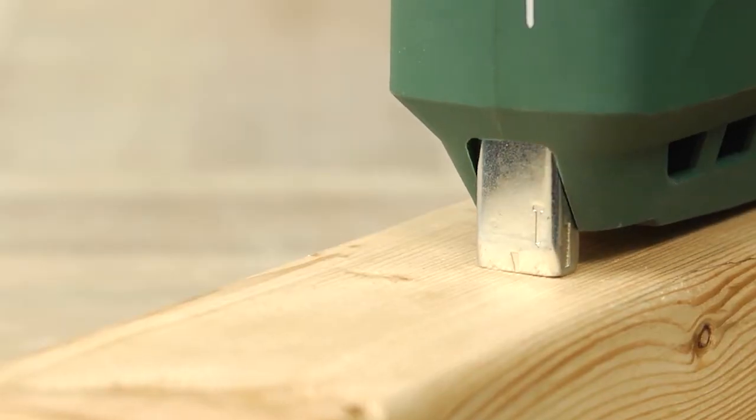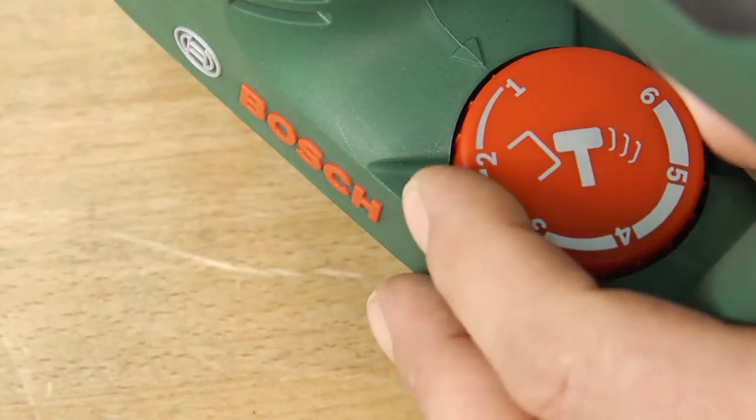To work in softwood or to use shorter staples, you can set a lower impact force on the setting wheel.